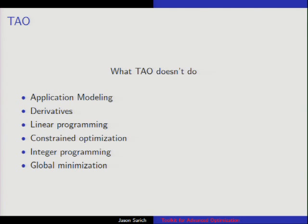What we don't do: we don't do your modeling, we don't know anything about discretization, and we don't know anything about your problem except in the special case of Pounders where we know it's a sum of squares. We don't know the derivatives unless you tell us — we can't figure those out. There are packages that will compute derivatives for you: if you've never heard of ADIFOR or ADOL-C, some tools developed at Argonne, it's worth checking out. They take your code, look at what operations you're doing, and automatically compute what your gradient should be.